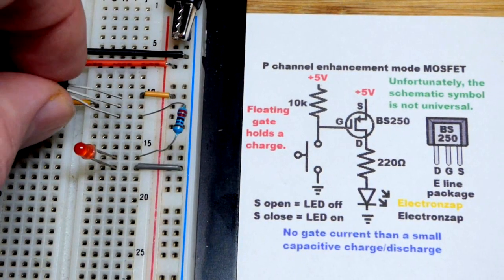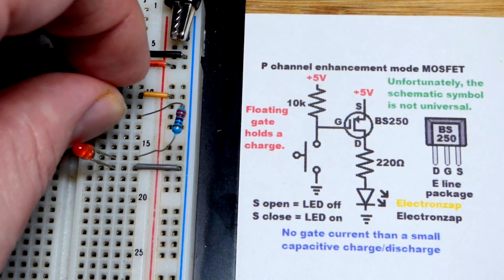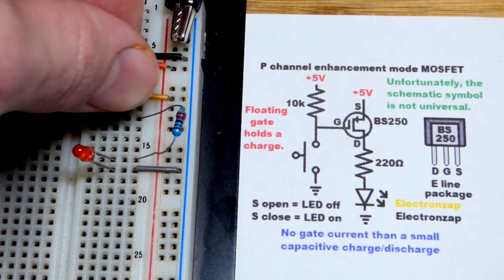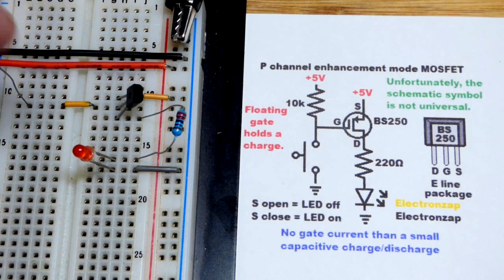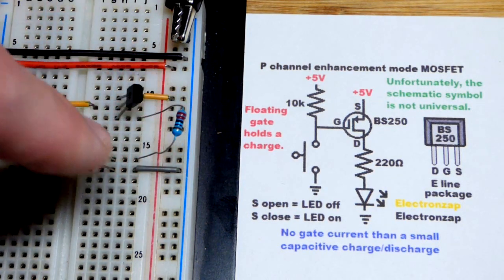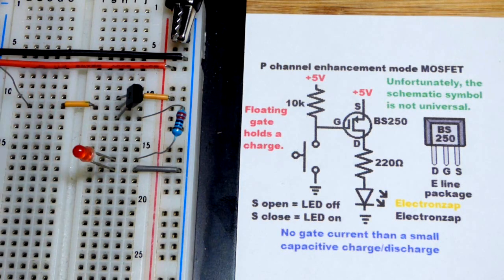And we come over here, and so I'm going to put the source to the positive supply up there, the gate to this middle jumper, there's a resistor going to the positive supply, and then the drain to a 220 ohm resistor. That's going to protect the LED from 5 volts right there.